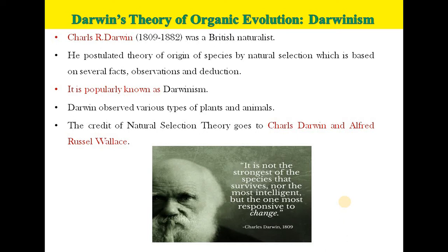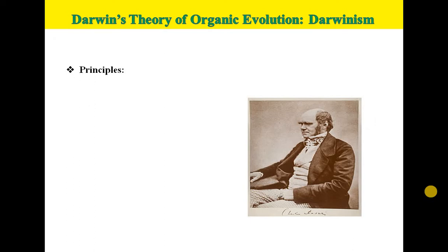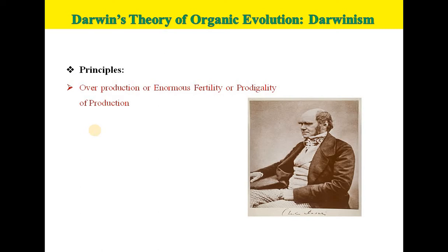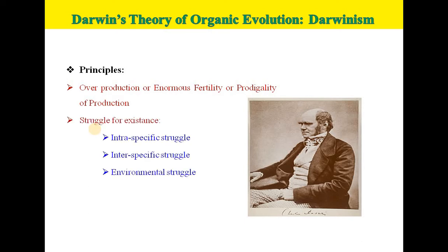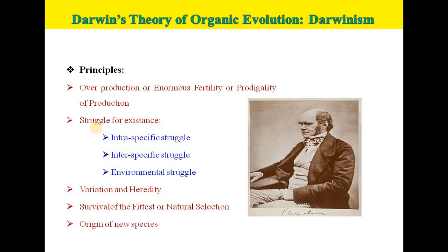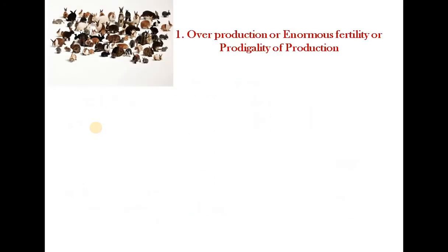Let us learn the principles of Darwinism. The first principle is overproduction or enormous fertility or prodigality of production. The second is struggle for existence, which leads to intraspecific struggle, interspecific struggle, or environmental struggle. There is variation and heredity among organisms, survival of the fittest or natural selection, and the last one is origin of a new species.